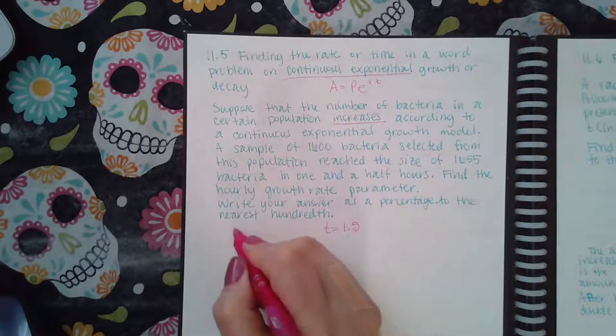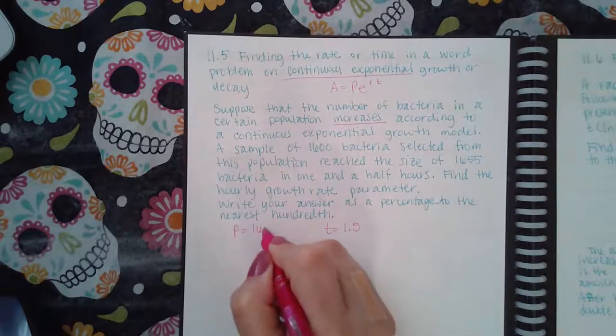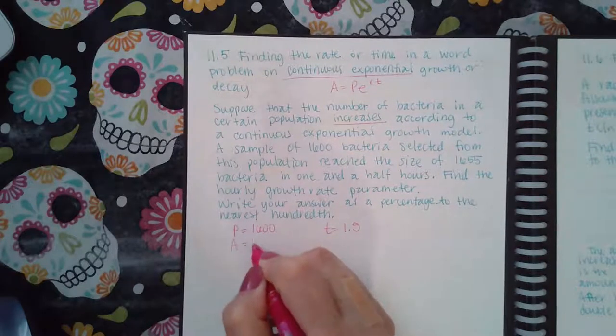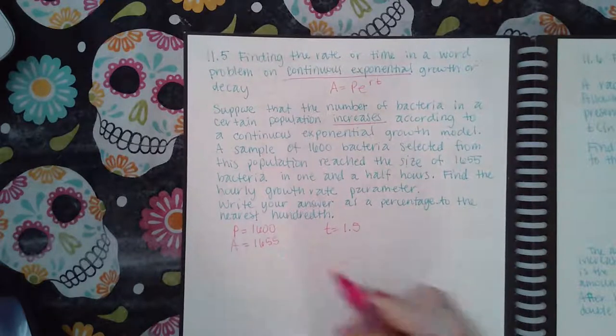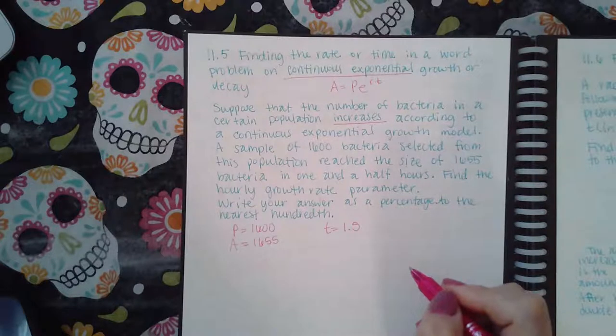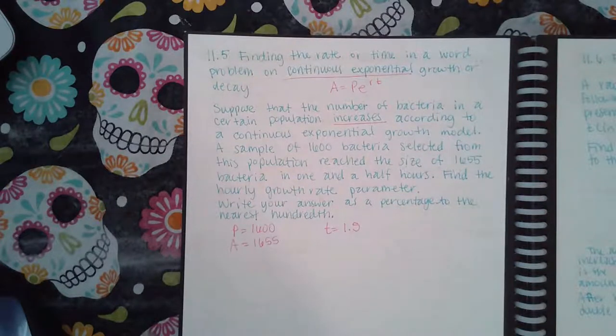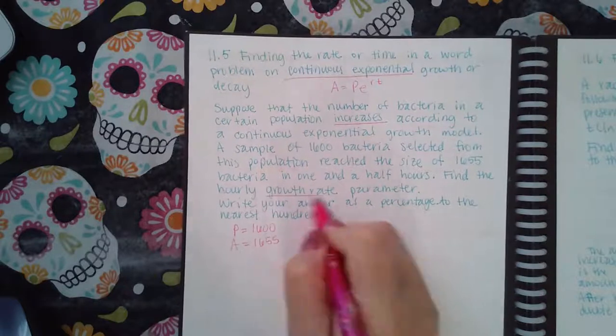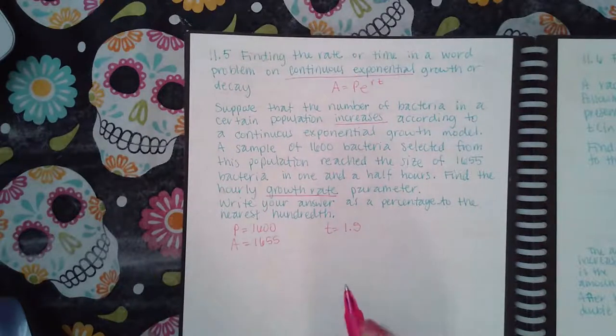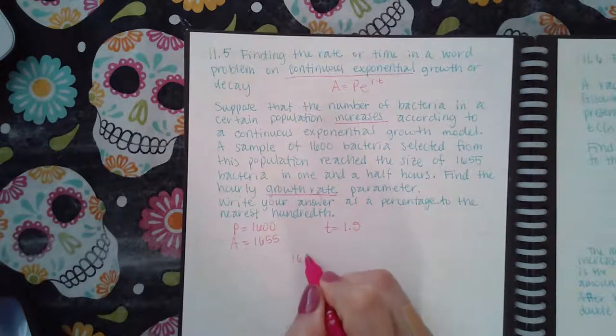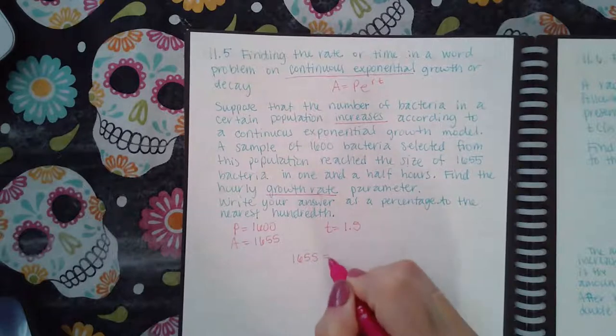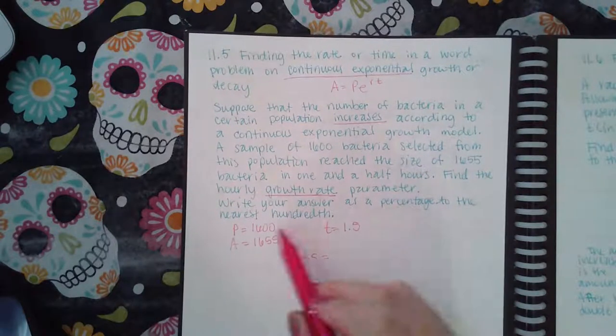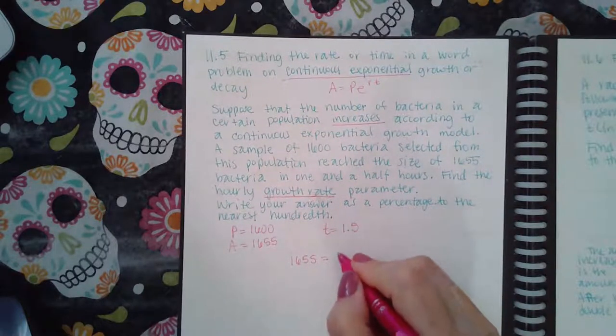The original amount was 1600, the amount after that time was 1655. It says find the hourly growth rate. Now because it increases and it's talking about growth rate, we know that the rate should be positive. Let's plug in all the values that we have and find that percentage rounded to the nearest hundredth.